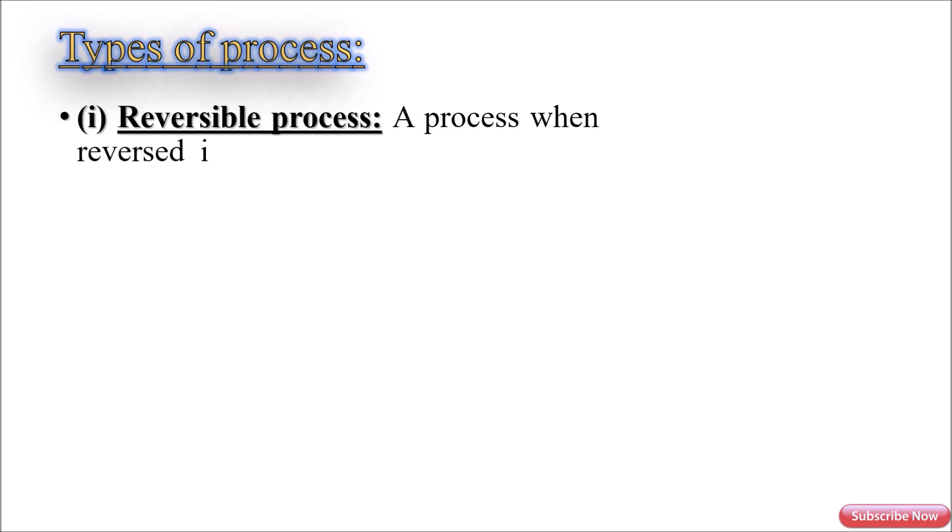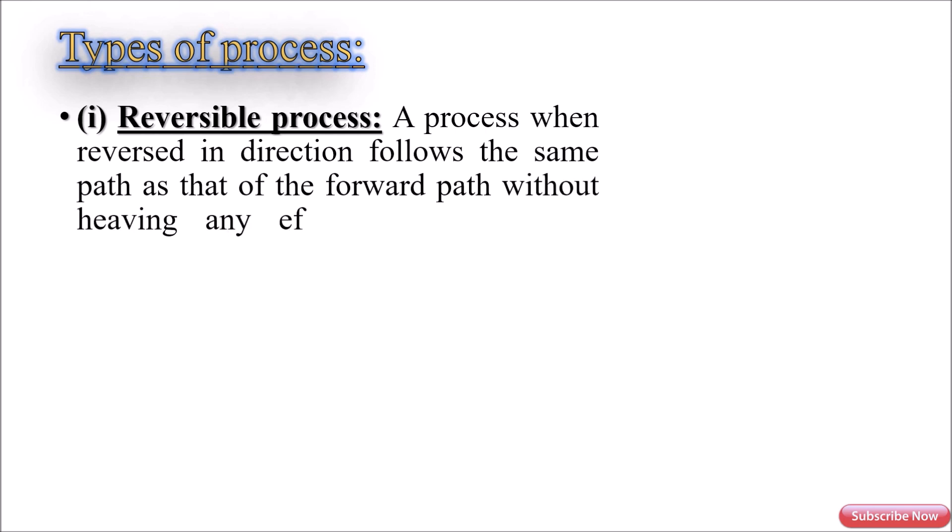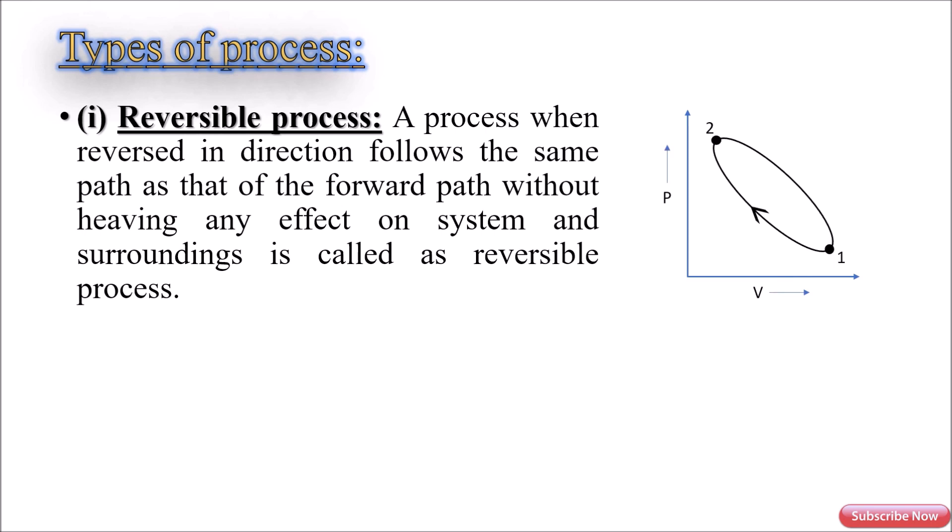Now we will see types of processes. This type of process is reversible process. A process when reversed in direction follows the same path as that of the forward path, without having any effect on system and surroundings, is called a reversible process. As shown in this diagram, both directions are in the same direction.